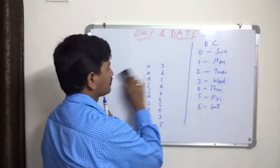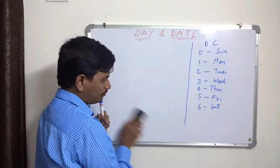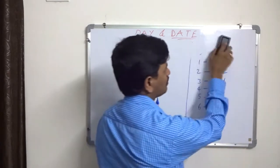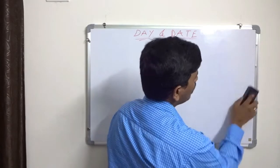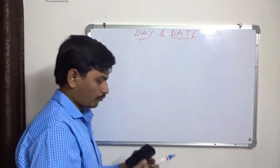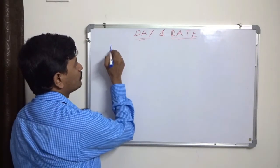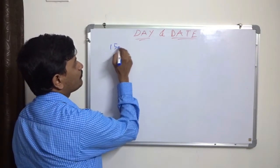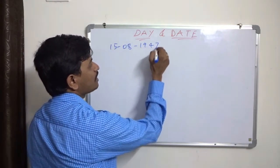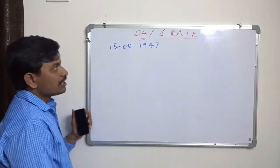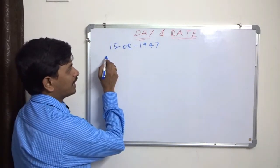The actual calculations I'll explain in the next video — how to find these codes the shortcut way. Now let us take our Independence Day: 15th August 1947.